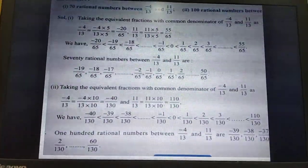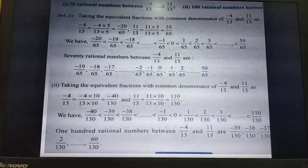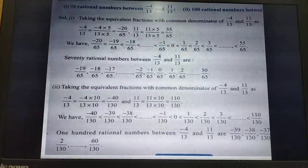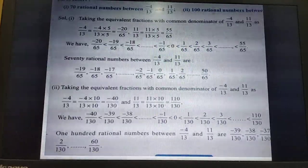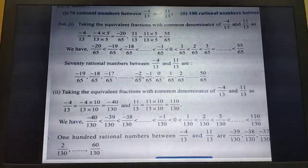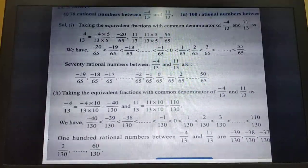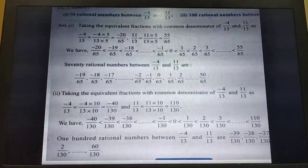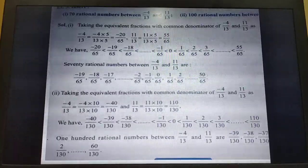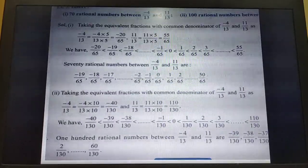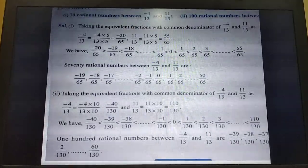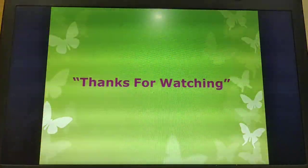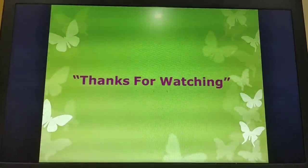Similarly, we can find many rational numbers between two given rational numbers by taking equivalent fractions with a common denominator. I think all of you understand this solution. Thank you all for watching this video.